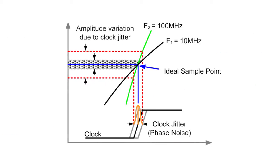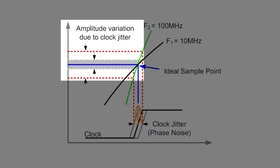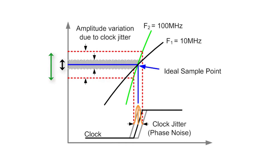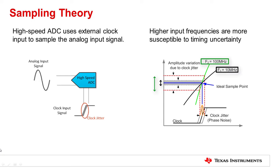During the sampling process, the timing uncertainty of the sampling clock edge causes an amplitude error. For a given amount of jitter, the error gets larger as the input frequency increases. Hence, the noise or the SNR degradation of the ADC is sensitive to both the amount of jitter and the frequency of the input signal.